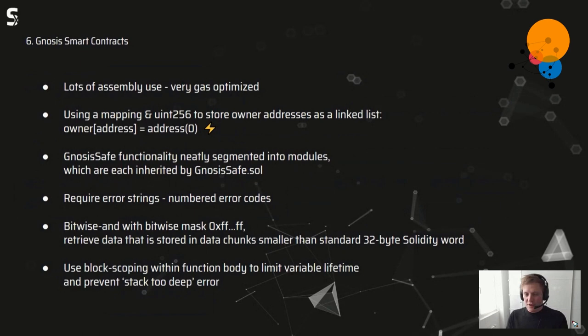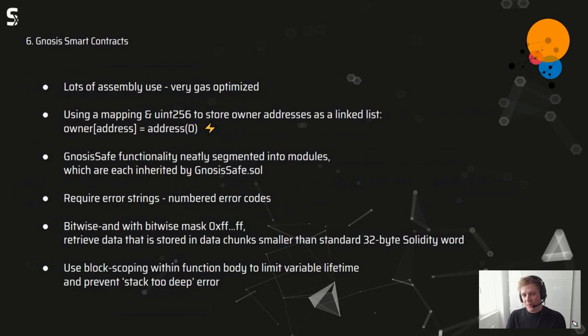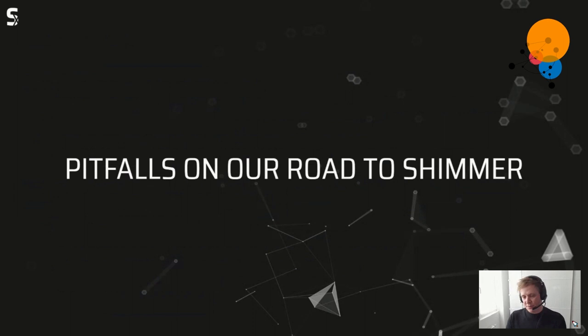Some technical takeaways: they use lots of assembly and the contracts are very gas-optimized. They use a linked list in combination with integers to check addresses in the Safe. The whole thing is segmented into modules. They require numbered error codes rather than plain error strings. They use bitwise AND with a bitwise mask to retrieve data stored in chunks smaller than the standard 32-byte Solidity word, and use block scoping with a function within the function body to limit variable lifetime and prevent stack-too-deep errors.